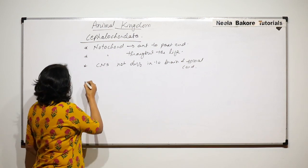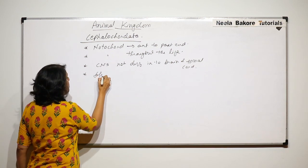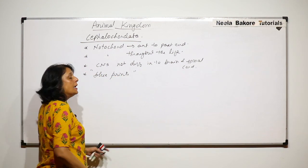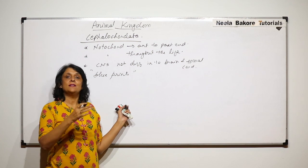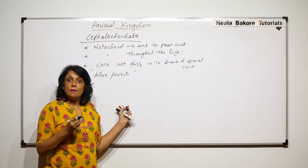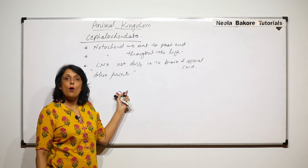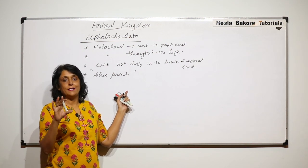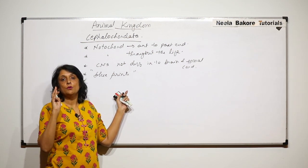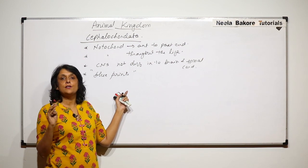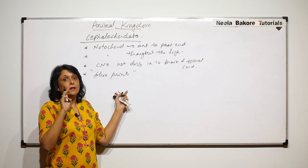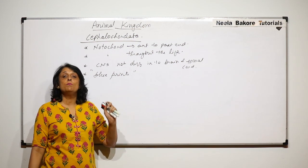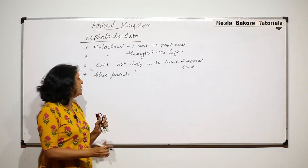Cephalochordates are considered as blueprints of chordates. Blueprint means the exact copy — they show all the chordate characters. They have notochord, they have pharyngeal gill slits, and they have a tail. All those characters are present throughout the life, and that is why they are called blueprints of chordates.